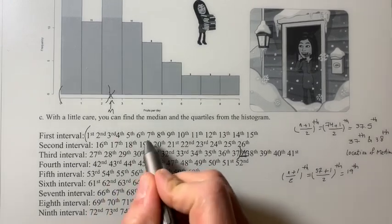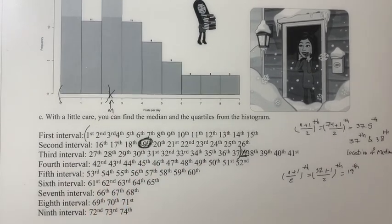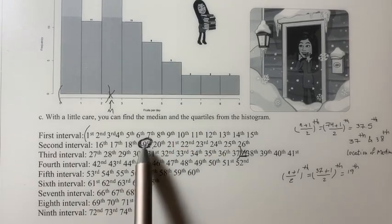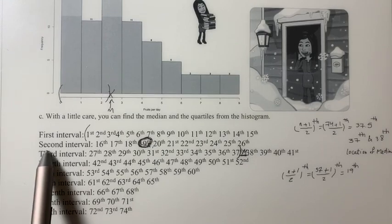So 19. So 19 is Q1. So now you see that observation number 19 falls in the second interval.